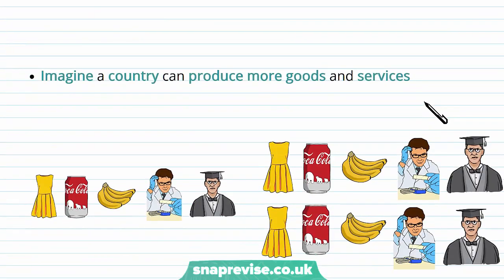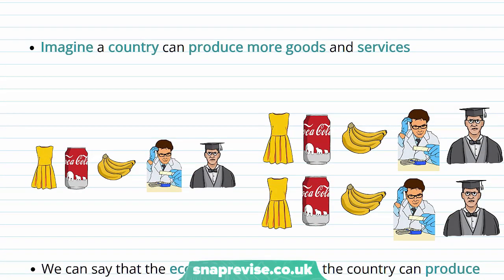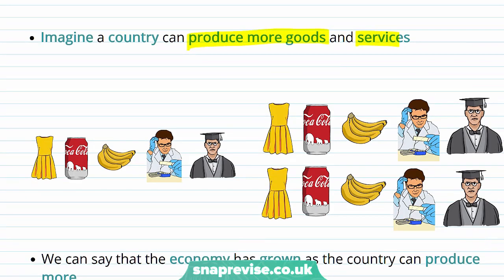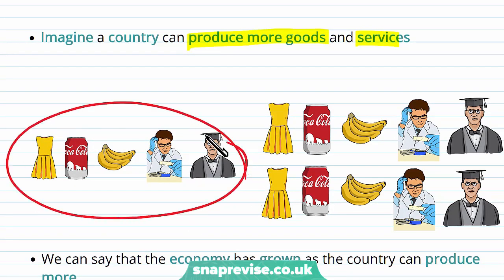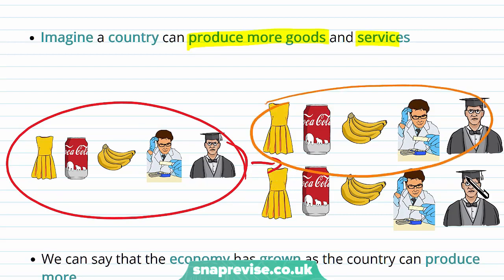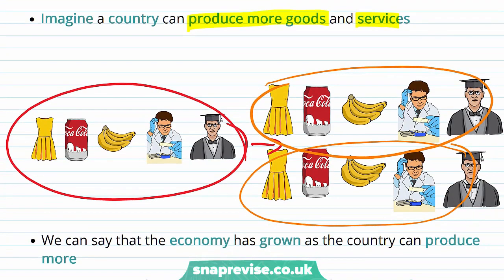Imagine that a country can produce more goods and services after one year — we've gone from producing this many goods to now doubling the number of goods we can produce. We now have a significantly larger amount of goods and services, and therefore we can say that the economy has grown.